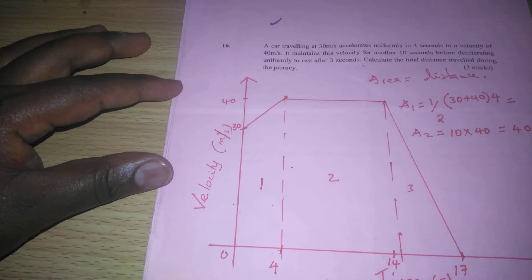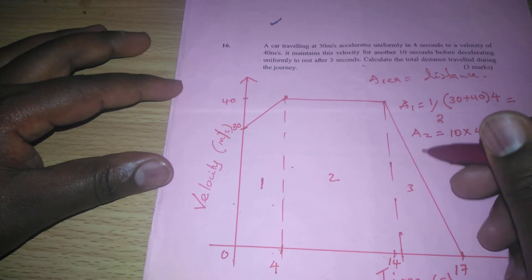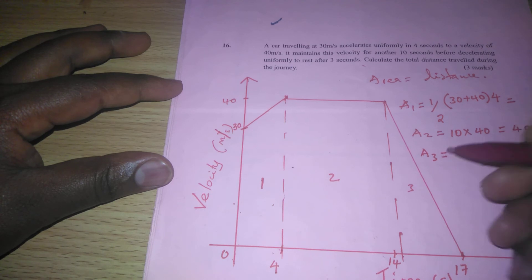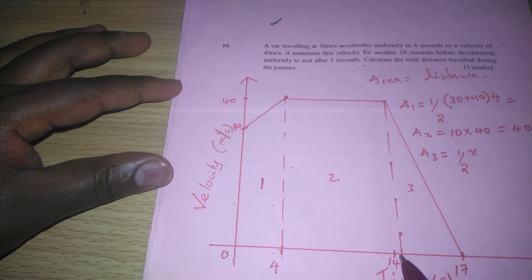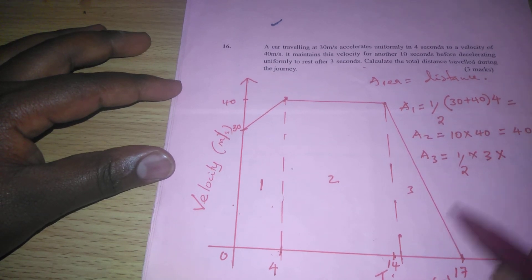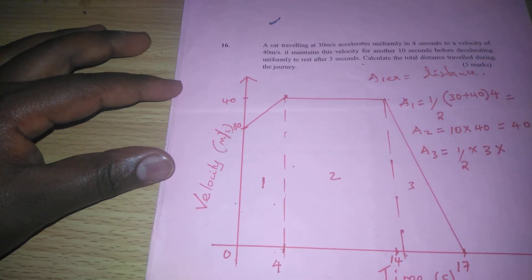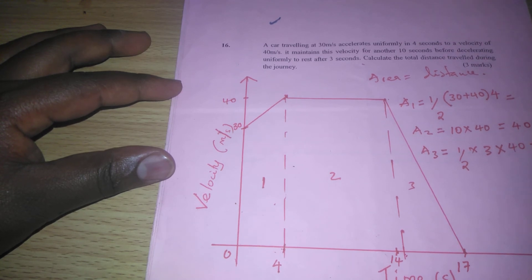The last shape is triangular. We use half times the base from 14 to 17, within 3 seconds. And from 0 to 40 is our height. Here we can have by 2, 1 and by 2, 20, such that we get 60.